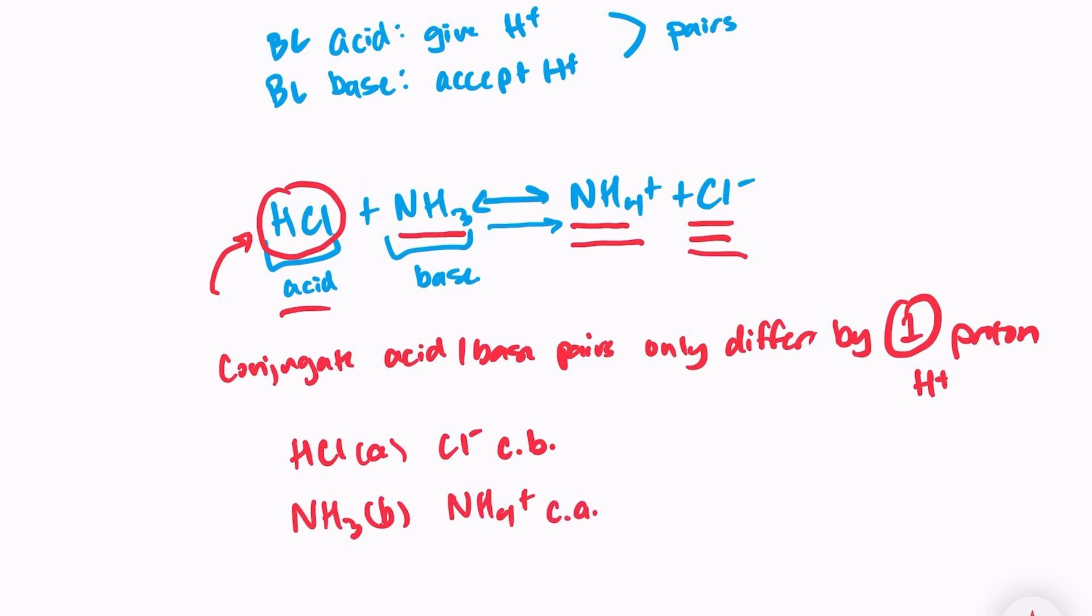And notice as well, the conjugate base pairs will always be opposite. So HCl was an acid, that means Cl- is our conjugate base. You cannot have an acid and a conjugate acid. They will always be opposite of each other. If you're starting with an acid, you're looking for the conjugate base. If you're starting with a base, like NH3, then you're looking for the conjugate acid. Acid-base pairs will always be together. You can't have an acid and an acid, or a base and a base.